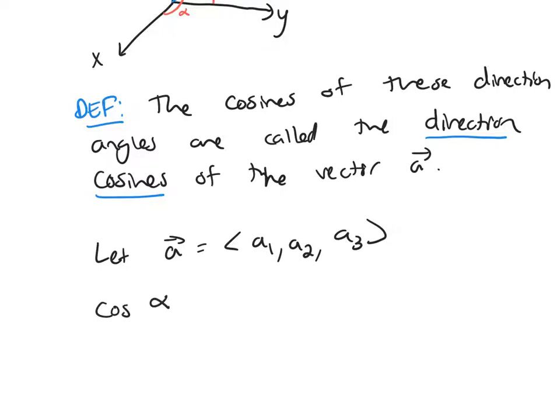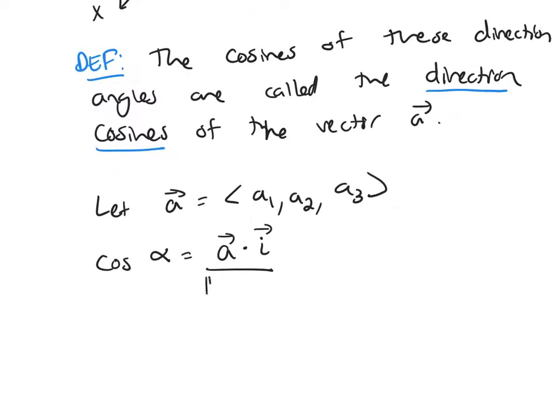Cosine of alpha would be the dot product of my two vectors over the magnitude of A and the magnitude of i. And if you take the dot product of A with i, you would get A1 over the magnitude of the vector A.